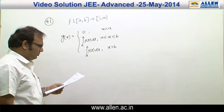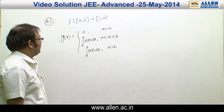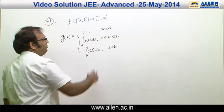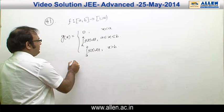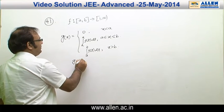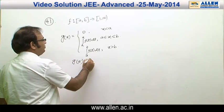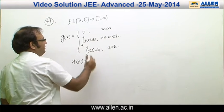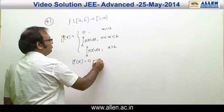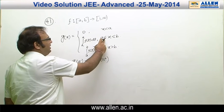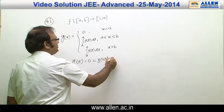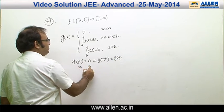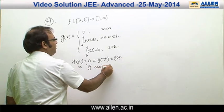We have to analyze the options. First, let us check the continuity of the function. The doubtful points are a and b. At x = a: g(a⁻) = 0, and g(a⁺) is the integral from a to a of f(t) dt, which is also 0. Since equality is given, g(a) = 0, which implies g is continuous at x = a.